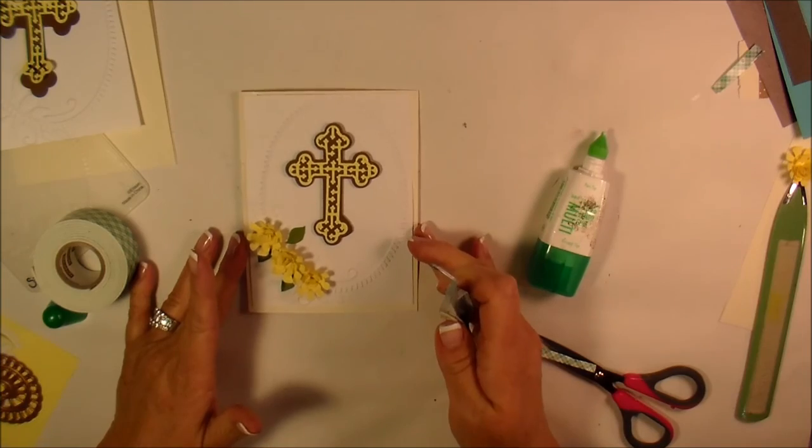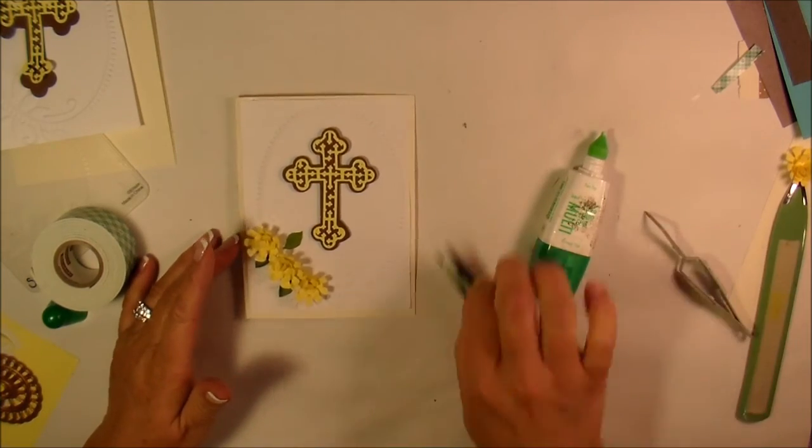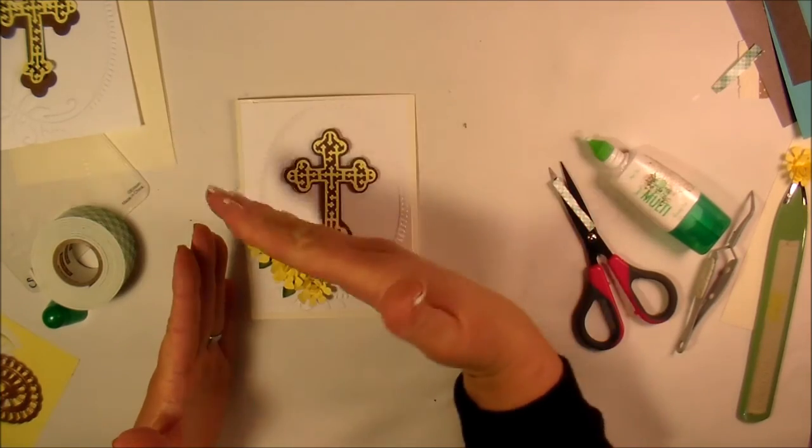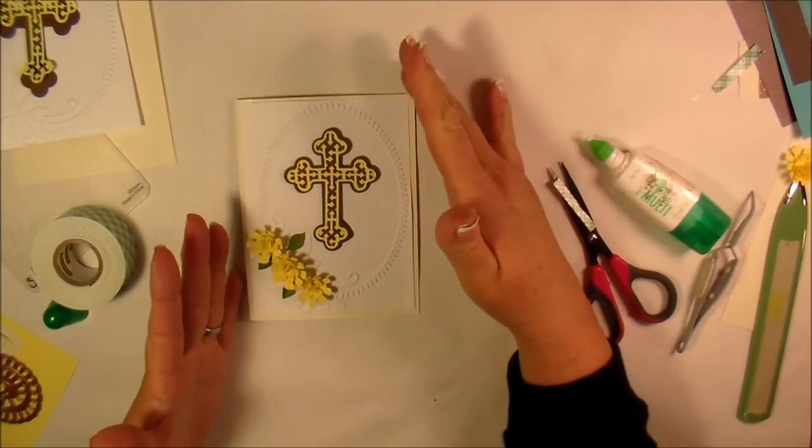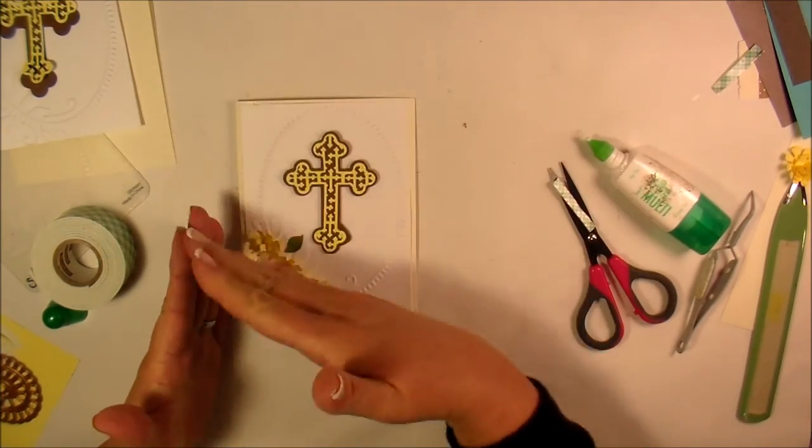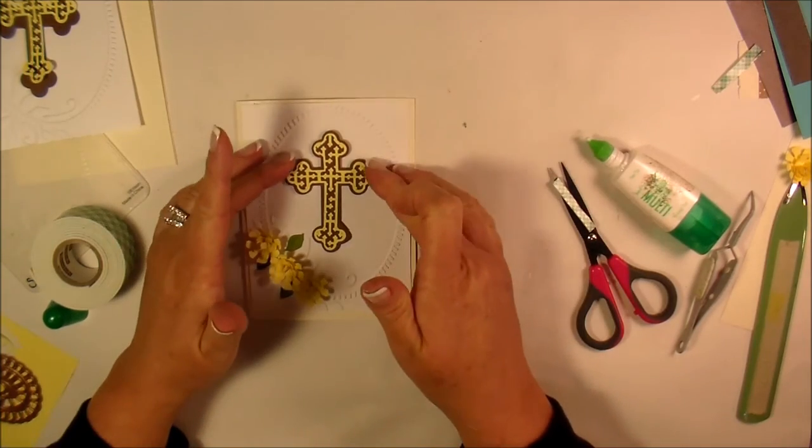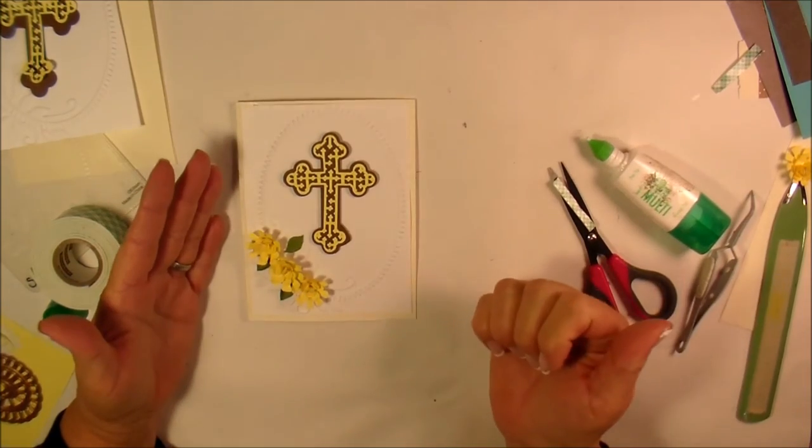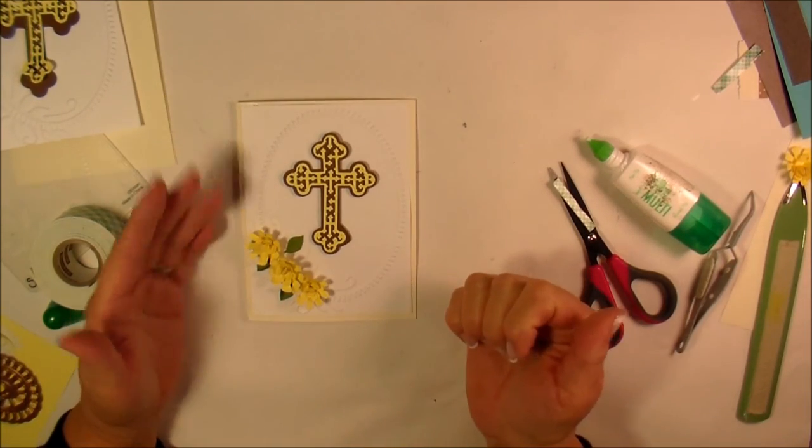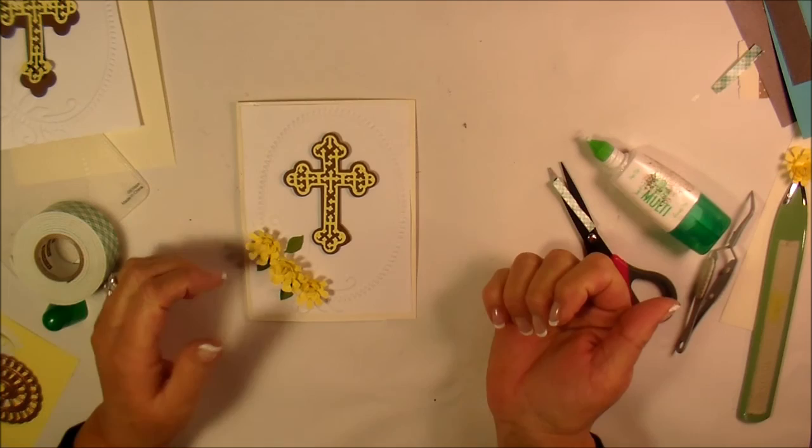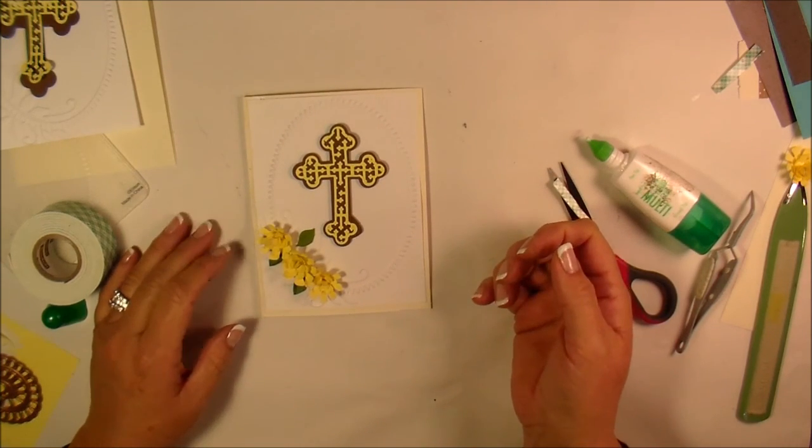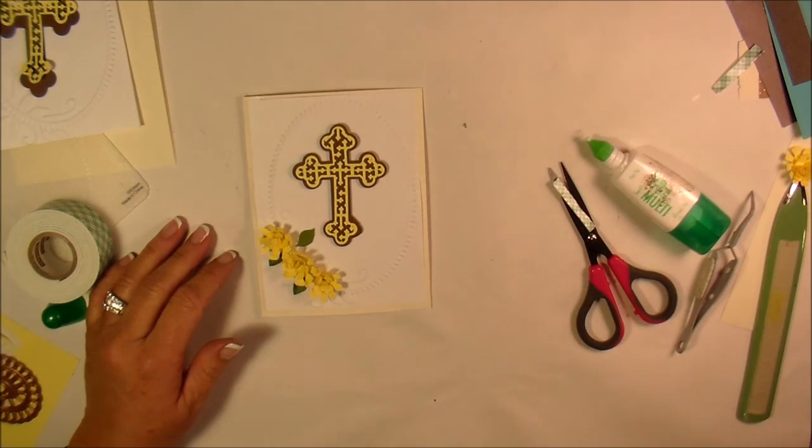And that's it. That's all I'm going to do to this card. I was thinking about maybe putting something up here. But I didn't want to confuse the eye when you're looking at a photo where it's going to be looking up and down. This way, the cross is the primary focal point. And then you have the beautiful yellow flowers here that just add a little bit more to it. All right. Thanks so much for watching. If you have any questions, feel free to leave a comment. I'll get back to you. Have a great day.